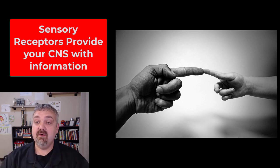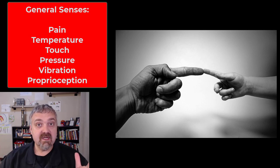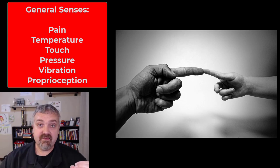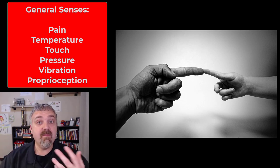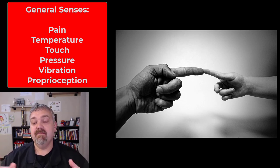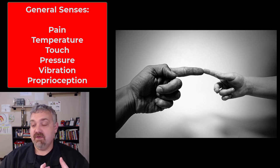They send that information to the brain and spinal cord. So all of your senses are going to be classified as either general senses or special senses. And there's a couple ways to look at how they're categorized. Let's talk about the general senses first.